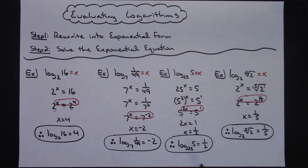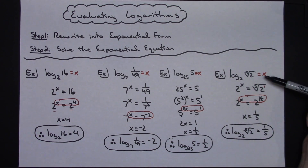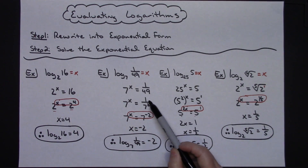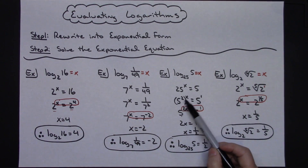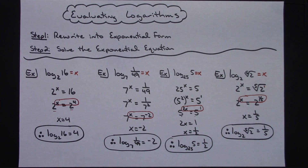All four examples were set up in such a way that you could get like bases, which made them simpler. You had to use radical-to-exponential form in one, laws of exponents to move a term from denominator to numerator in another, and power-raised-to-a-power in another. Reviewing those laws of exponents is going to help tremendously, especially if you're evaluating logarithms by hand. Thanks for watching — be sure to share with your friends.